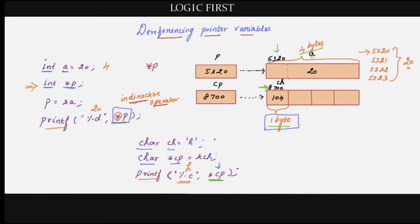We know that for storing an integer we need four bytes and for storing a character we need just one byte. But if you ask whether an integer pointer needs four bytes and a character pointer needs just one byte — no, it's not like that. Pointers are always going to contain addresses, so they will be of constant size — probably four bytes in most compilers. It doesn't matter whether it is an integer pointer or a character pointer. We mention int or char while declaring the pointer only because the compiler needs to know how many bytes of data to fetch when we use the indirection operator.